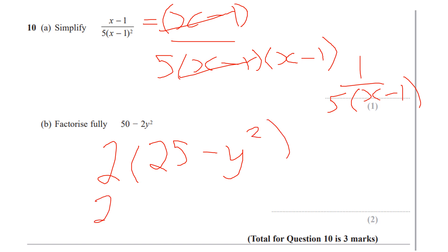So it will be 2 lots of 5 plus y times 5 minus y. So remember, difference of 2 squares can appear in any form. It's normally in the form x squared minus y squared. But it can be in the form of a square number subtract a square term. And that is my final answer.